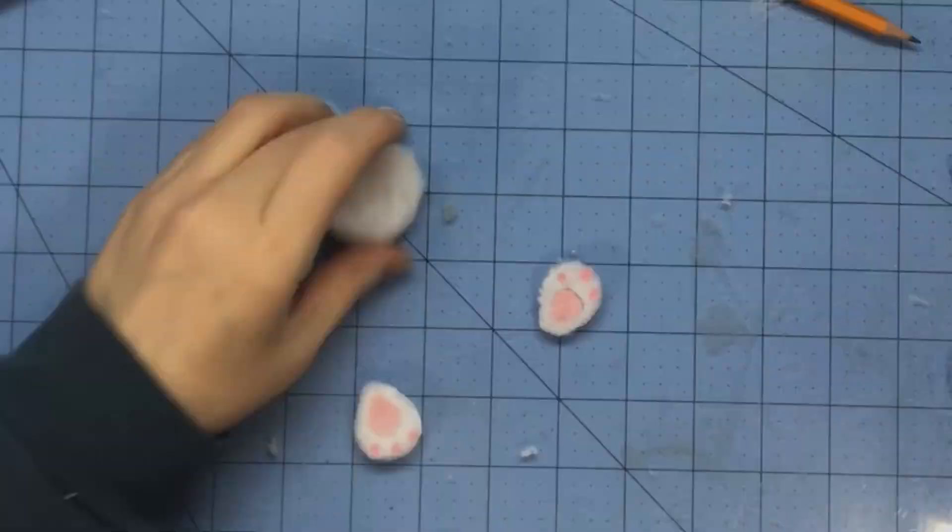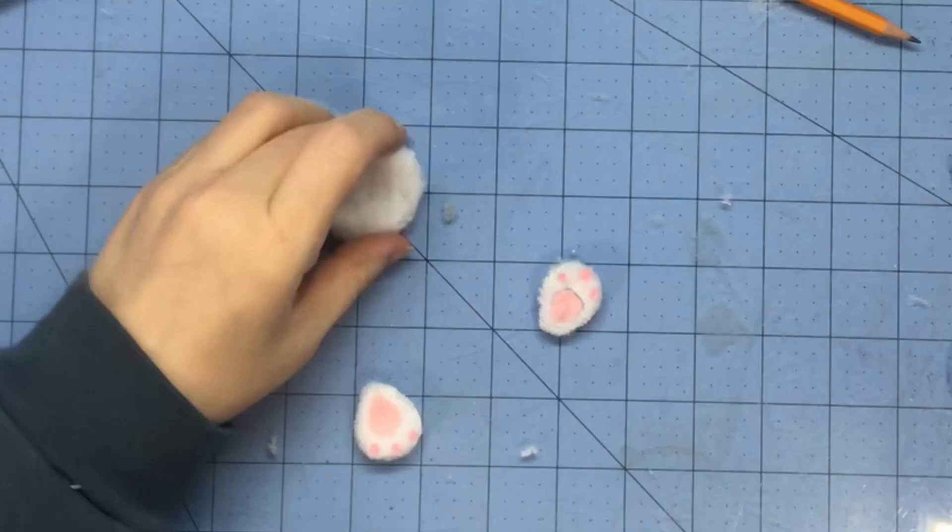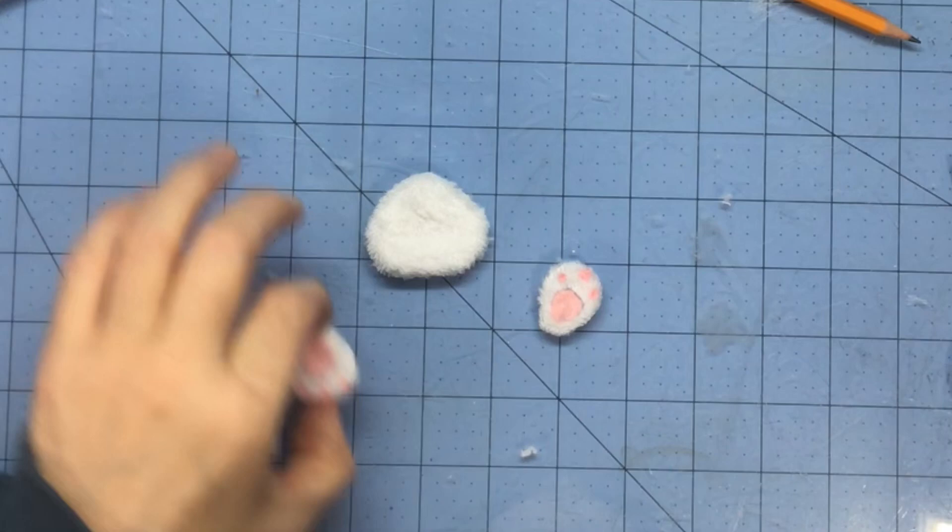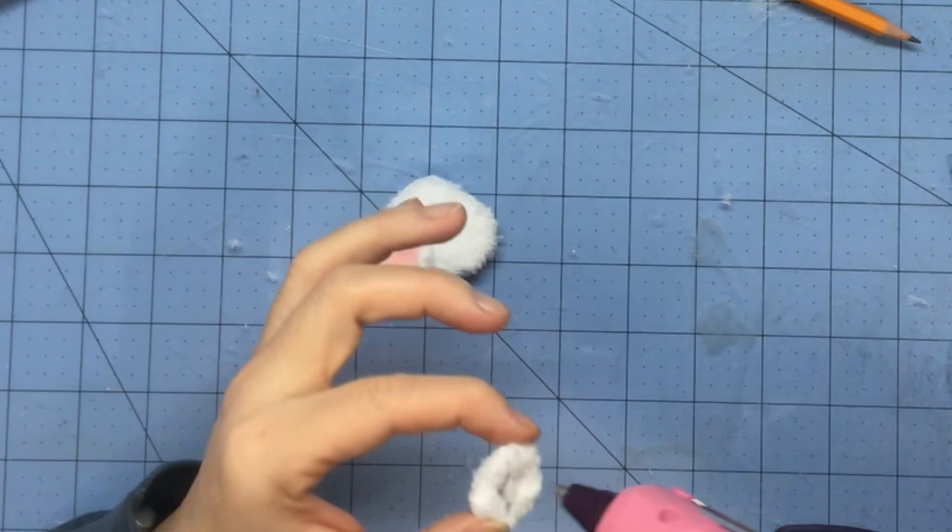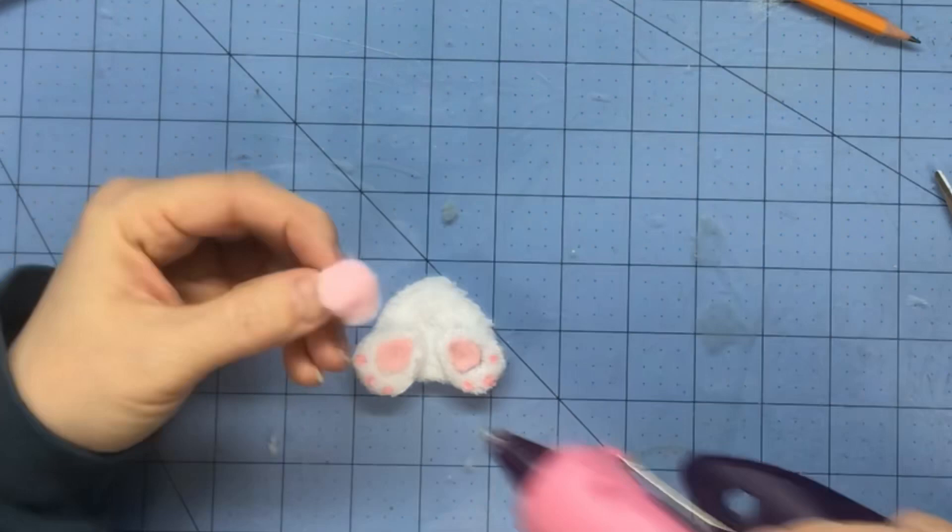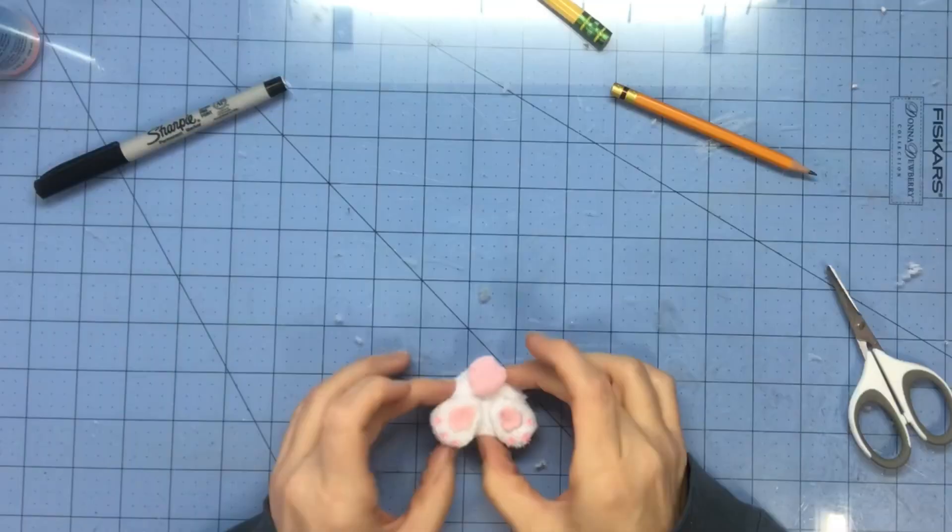Now that I have all my pieces together, I'm just going to assemble my butt. You want the point of your butt up. Then put one foot on with hot glue—or whatever glue you want—and then put the other foot on. Then take a little pink pom-pom and put it on the butt for the tail, and there you have it: an easy bunny butt. Thank you for watching.